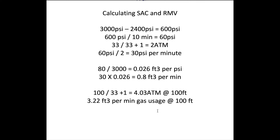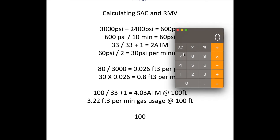So if you want that full 24 minutes you really need a larger tank. A steel 100 would leave you with only about 23 cubic feet remaining, which isn't much. A steel 120 is your best bet — 120 cubic feet minus the 77 you use still leaves you 43 cubic feet of gas, so if you run into any issues, whether it's an out-of-air buddy or you take a little longer than planned at depth, you still have plenty of gas to get back to the boat.